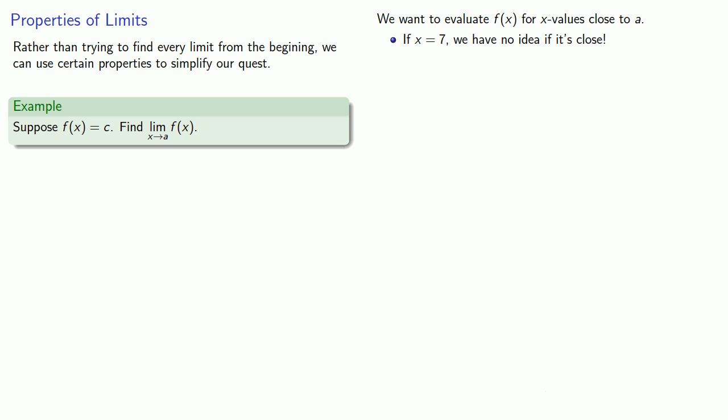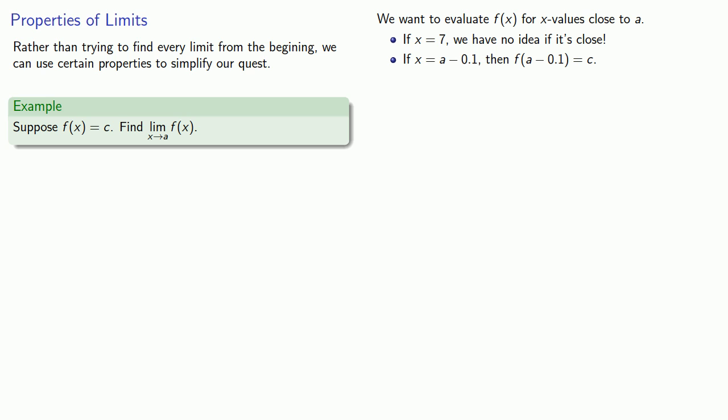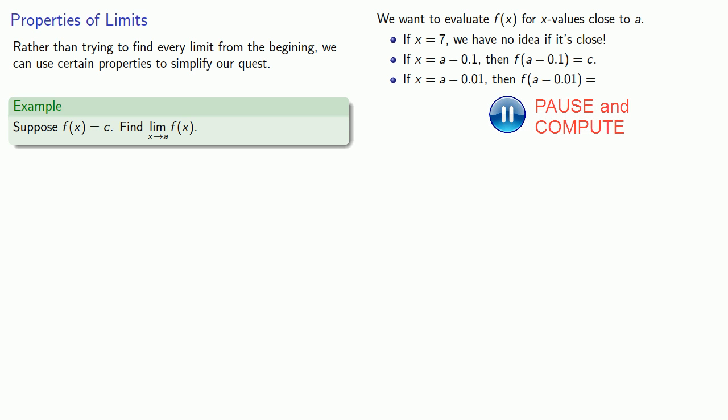One possibility is that x is a little bit less than a, which we can express as a minus some small amount. So if x is a minus 0.1, then f of a minus 0.1 is c. And that's because f of x is c, so no matter what x is, the output is always going to be c. Let's take another value of x close to a — how about a minus 0.01. Then f of a minus 0.01 is c once again.